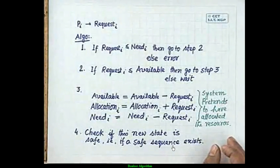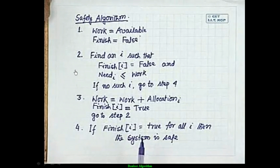If the state is safe, we have a safe sequence — for example, P0, P1, P3, P4, P2. For the safety algorithm: set Work = Available and Finish[i] = false. Find an index i such that Finish[i] = false and Need[i] ≤ Work. If no such i exists, go to step 4. Otherwise, set Work = Work + Allocation[i], set Finish[i] = true, and repeat step 2.